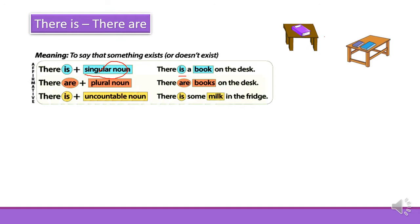There is can also be followed by uncountable nouns — things that we cannot count. For instance, there is some milk in the fridge.